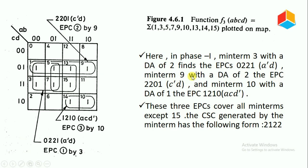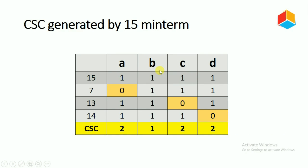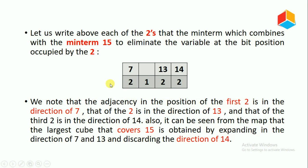Minterm 11 is not considered because it is not within function F3. We consider only 7, 13, and 14. That is why we represent the b term as not changing from 1 to 0, giving the candidate solution cube (2, 1, 2, 2). The adjacency in the position of the first 2 is in the direction of 7, the next 2 is in the direction of 13, and the third 2 is in the direction of 14.